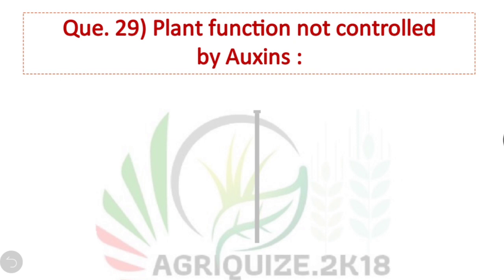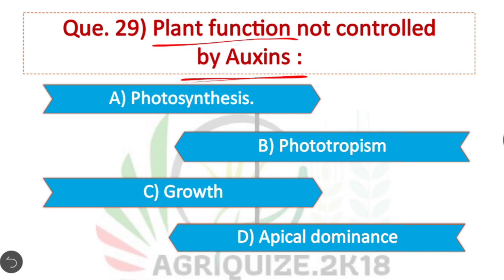Question 29: Which plant function is not controlled by auxin? Option A is correct: Photosynthesis. Phototropism, growth, and apical dominance are controlled by auxin, but not photosynthesis.